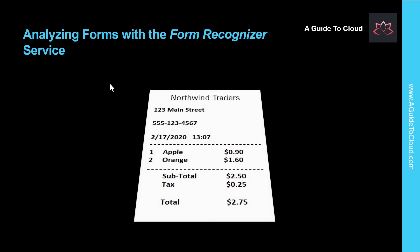The next topic is analyzing forms with the form recognizer service. A common problem in many organizations is the need to process receipt or invoice data — for example, a company might require expense claims to be submitted electronically with scanned receipts. It's relatively easy to scan receipts to create digital images or PDF documents and use OCR technologies to extract text contents. However, typically someone still needs to review the extracted text to make sense of it. Organizations with large volumes of receipts and invoices are looking for AI solutions that can not only extract text data but also intelligently interpret the information it contains.